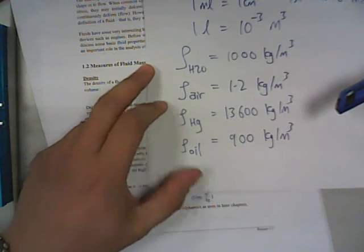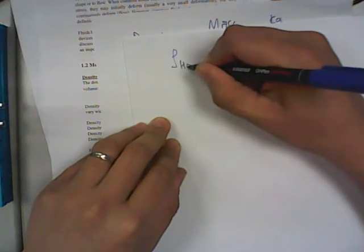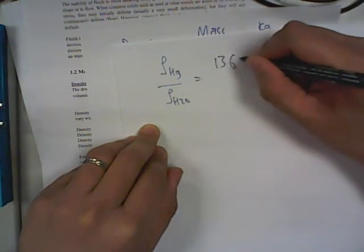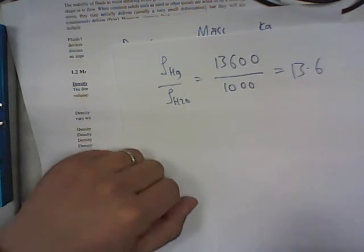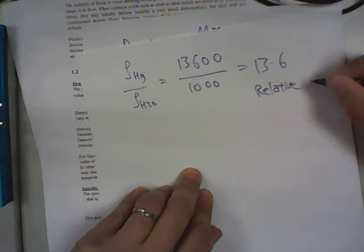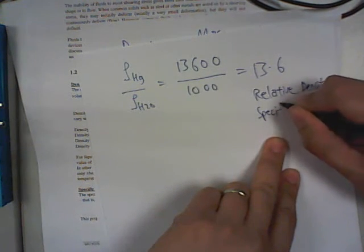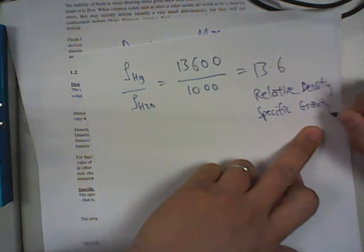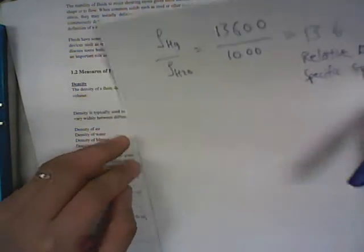So if I ask you, how many times is mercury denser than water? What would the answer be? Your number should be 13,600 over 1000, so this would be 13.6 times denser than water. This we call the relative density, which is also called the specific gravity.